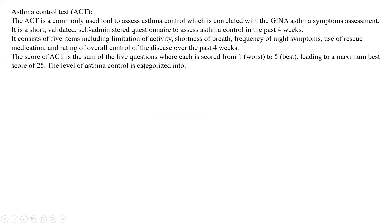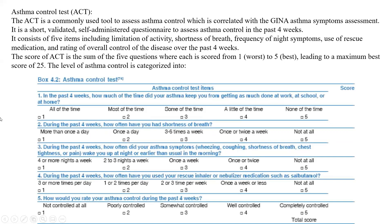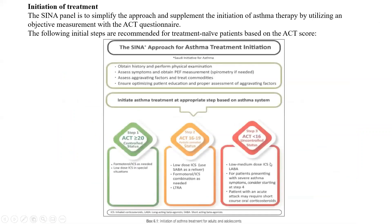The ACT score is the sum of five questions, scored from one (worst) to five (best), leading to a maximum best score of 25. This is how you score the patient as a physician to proceed with treatment. The categories are: above 20, 16 to 19, and below 16, corresponding to completely controlled, partially controlled, and uncontrolled.